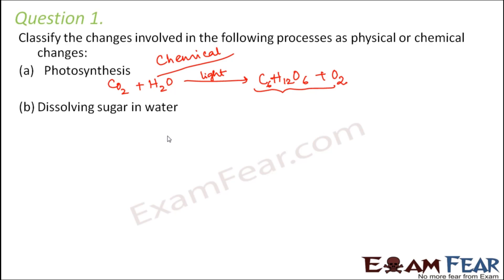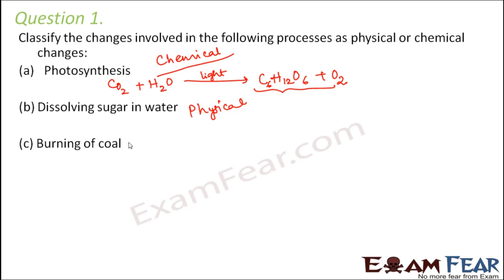Next is dissolving sugar in water. When we dissolve sugar in water, no chemical reaction takes place — no new chemical substances are formed. Sugar and water remain together for some time, and the change is reversible. When you heat the sugar solution, the sugar and water get separated out. So this is a physical change.